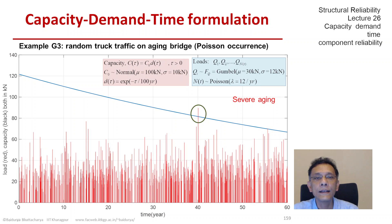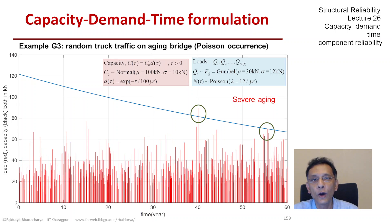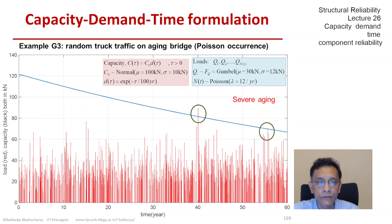If we were finding the time to failure, the random TTF from this realization, we would report that it is 40 years. This is also an interesting case of the definition of first passage. If we allowed the process to continue, there would be another failure around 55 years of age, but that would not matter because a failure has already happened — we wouldn't even continue the simulations.